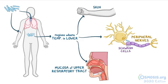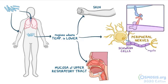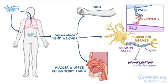Schwann cells wrap their plasma membrane around peripheral nerve axons, forming the myelin sheath. This is possible because of a virulence factor called phenolic glycolipid 1, or PGL1 for short, which attaches to a protein called laminin 2, which is found on the Schwann cells. Binding to Schwann cells induces demyelination, affecting transmission of electrical impulses through the nerve axon and causing nerve injury.